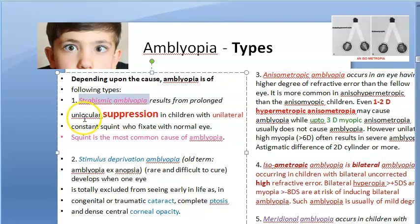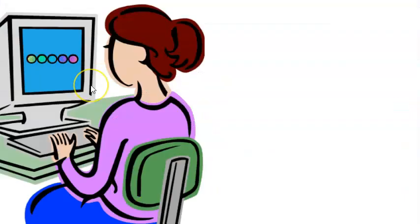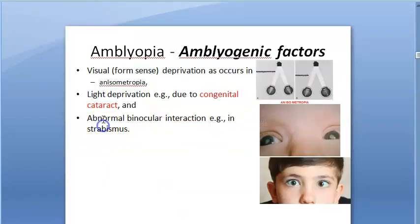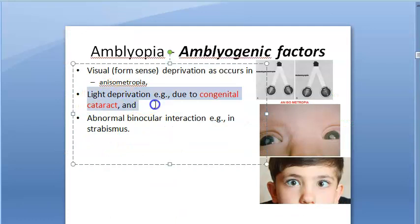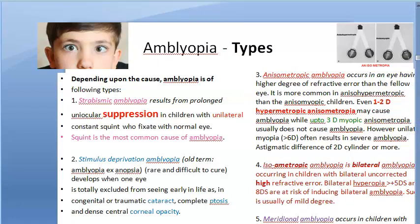For strabismic amblyopia — from abnormal binocular interaction — there will be uniocular suppression of one eye. In unilateral constant squint, the patient fixes only with the normal eye. Strabismic amblyopia is the most common cause of amblyopia. Squint is the most common cause of amblyopia.